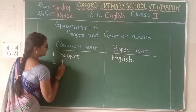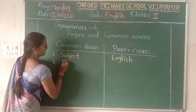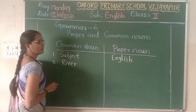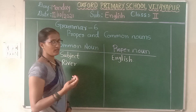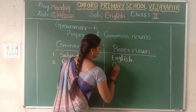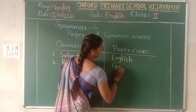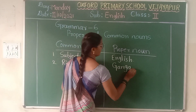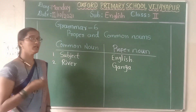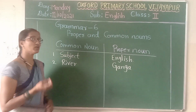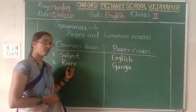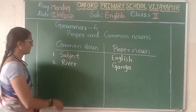Next: 'river' — river is a common noun, it can be any river. Here I will write Ganga. Ganga is a particular name given to a river.